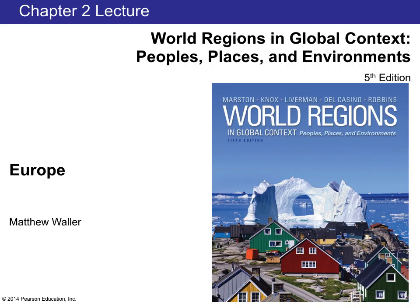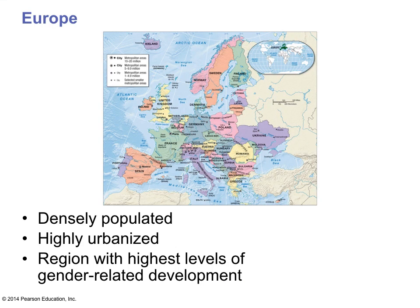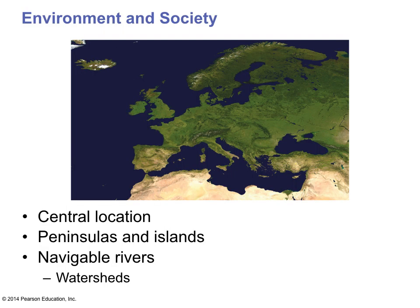Our next chapter is on Europe. Europe is a densely populated realm, highly urbanized with very high levels of gender-related development. It's centrally located with a number of peninsulas and islands, and the rivers are navigable which makes Europe easy to develop.